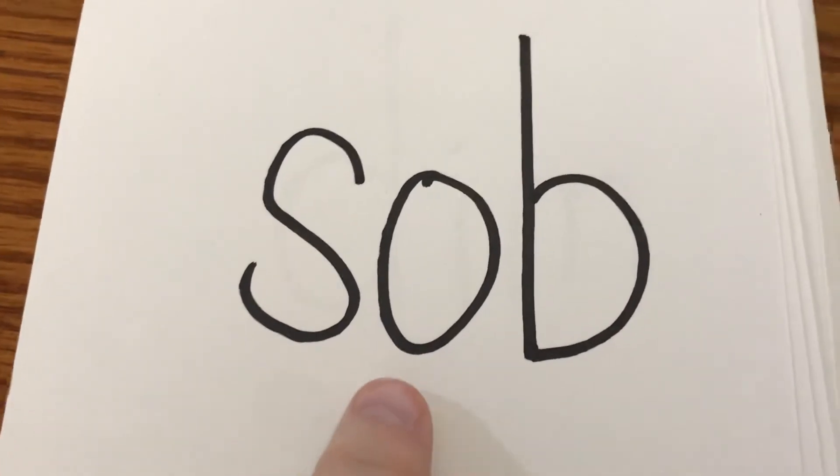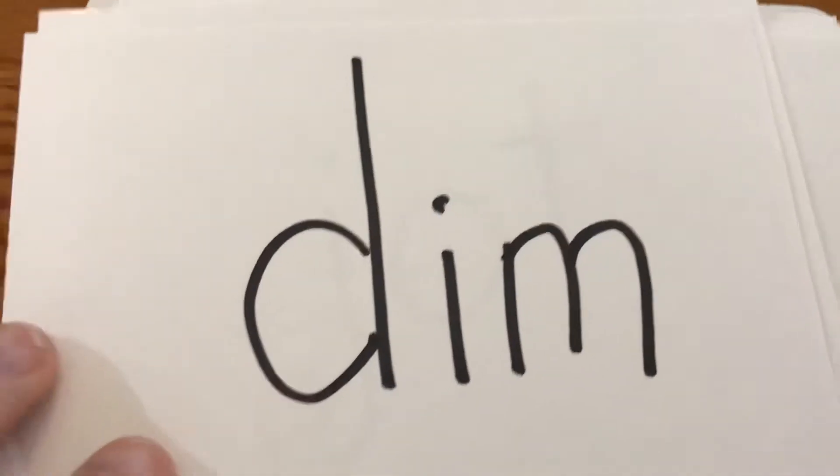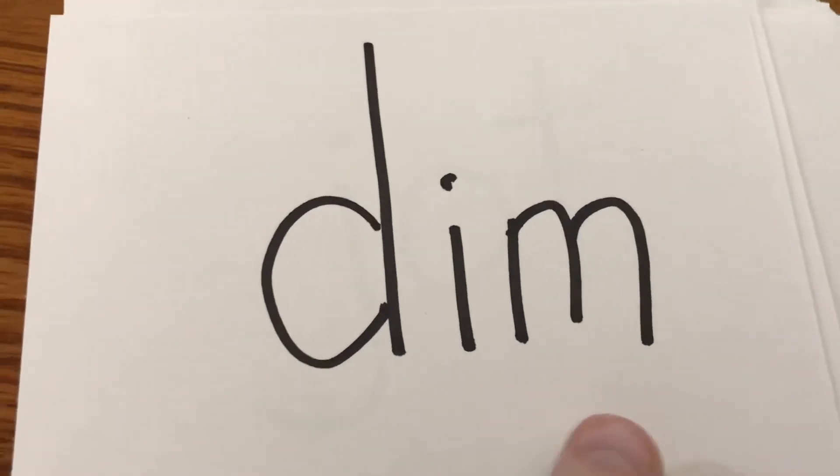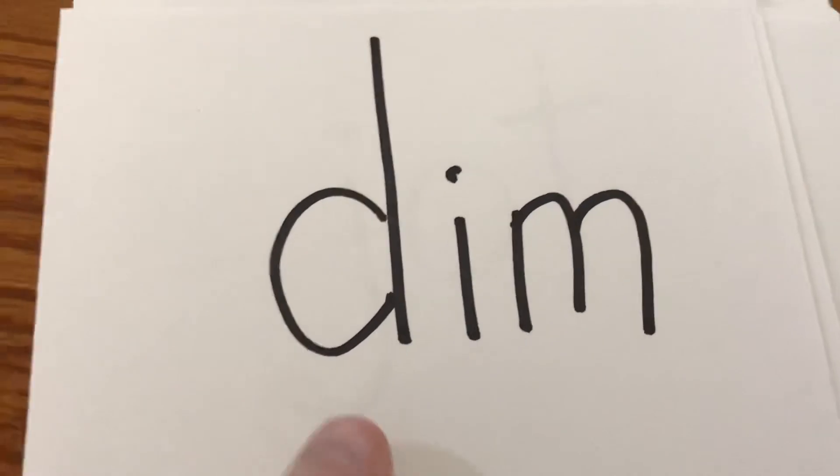S-a-b. Sob. A sob is like a cry. D-i-m. Dim. If you dim the lights, that means you turn them down low.